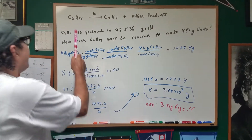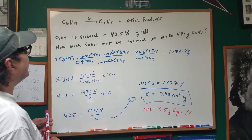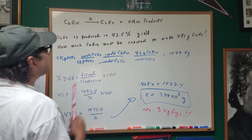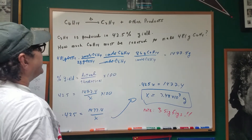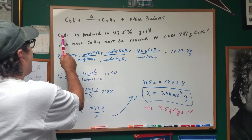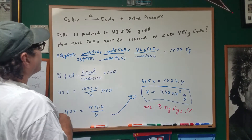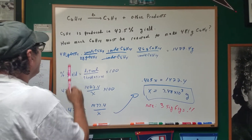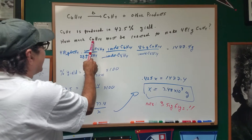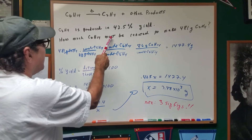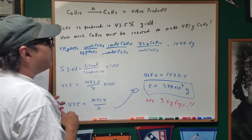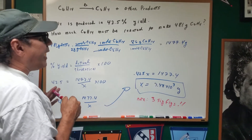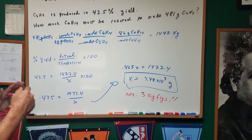All right. We're going to take a molecule of hexane, and we're going to heat it up, and we're going to bust it apart. We're going to get several products, one of which is called ethylene. The ethylene, C2H4, is produced in 42.5% yield. How much hexane, C6H14, must be reacted to make 481 grams of the ethylene?